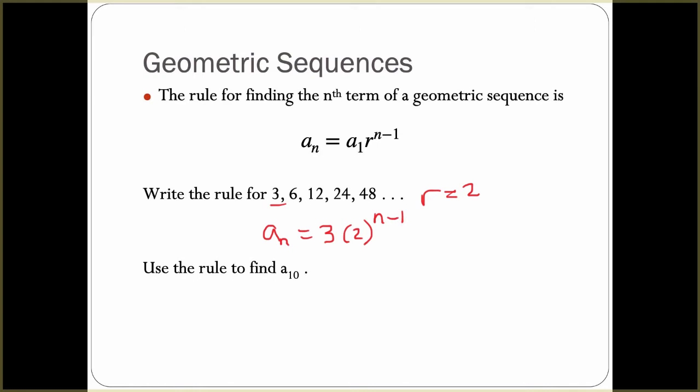If we are going to find the 10th term, we would have a_10 = 3 times 2 to the (10 - 1) power.